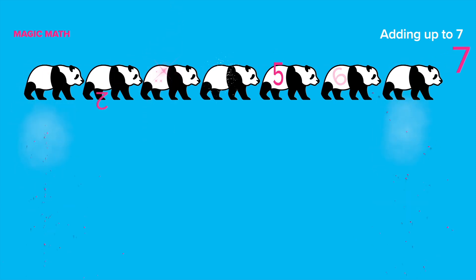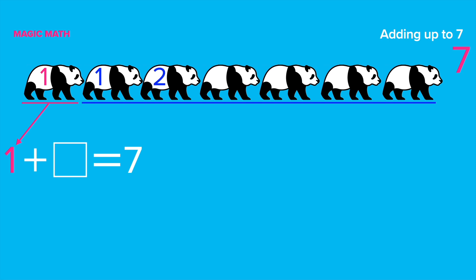Now, let's solve some math puzzles. First puzzle. 1 plus something equals 7. Hmm. Let's think about it and draw it out. First, let's underline the first panda and connect it to number 1. How many pandas are not counted? Let's count. 1, 2, 3, 4, 5, and 6. Right! 6 pandas. So, 1 plus 6 equals 7.